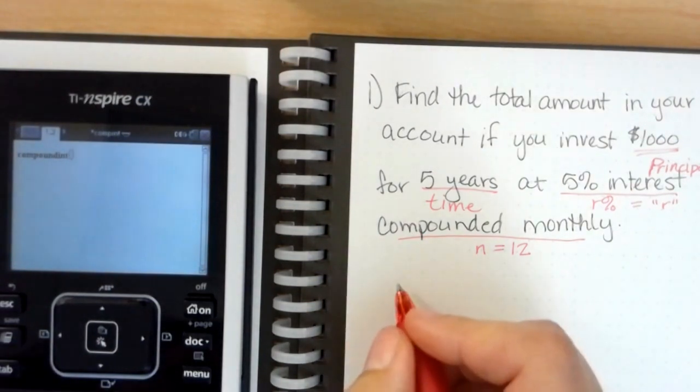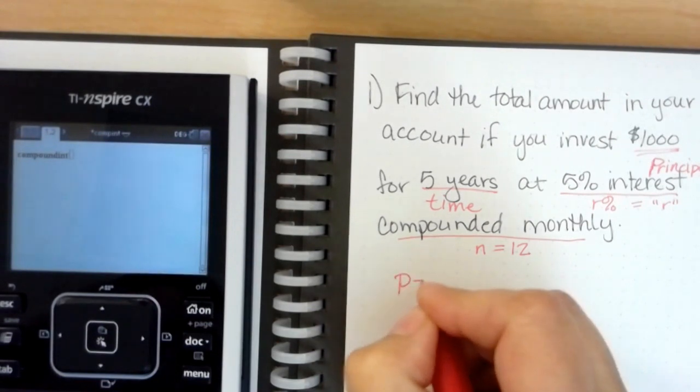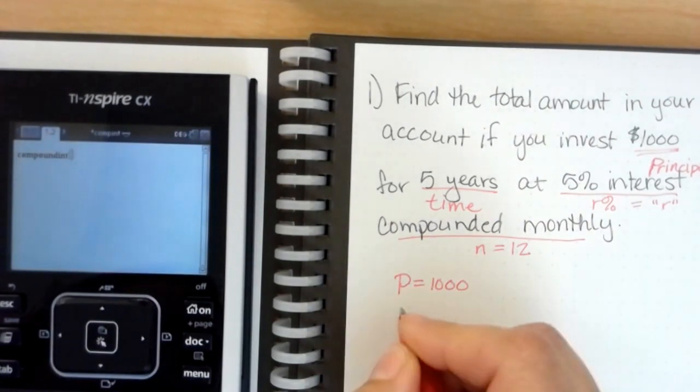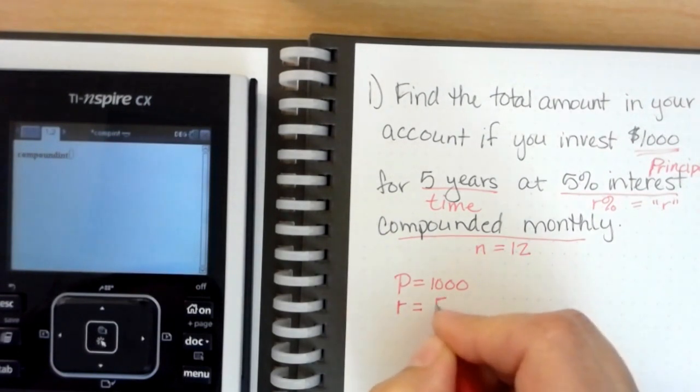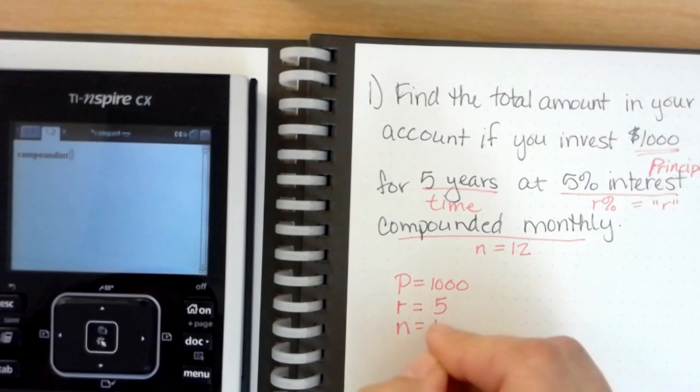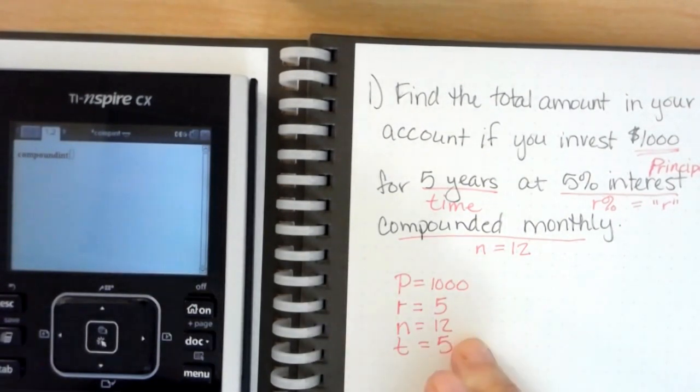So just to write, jot down our numbers we're going to be plugging into the calculator: we're going to plug in P equals one thousand, r equals five, n equals 12, and t equals five. We want to put them in that order: P, R, N, T like print. That's how we're going to type it into our calculator.